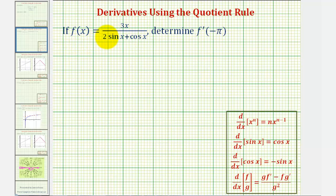If f of x equals three x divided by the quantity two sine x plus cosine x, we want to find f prime of negative pi.